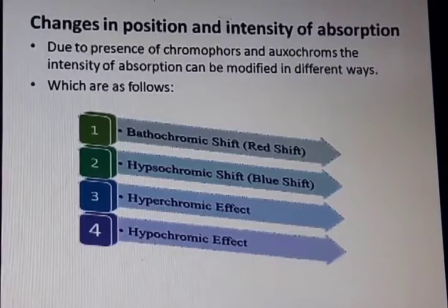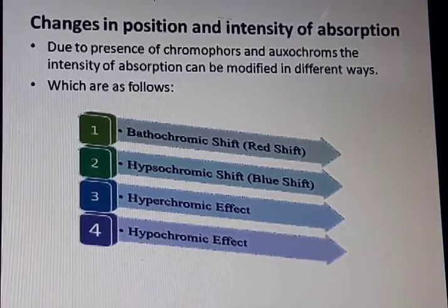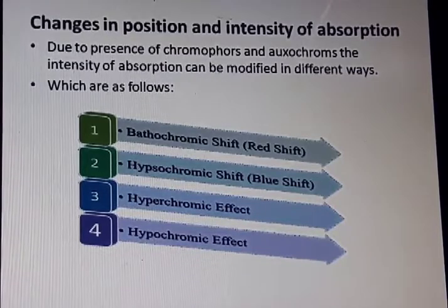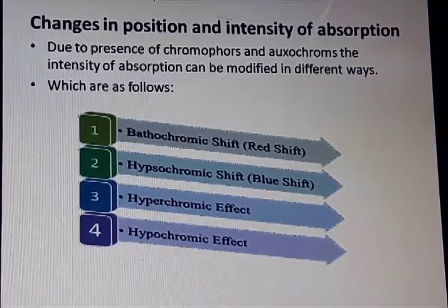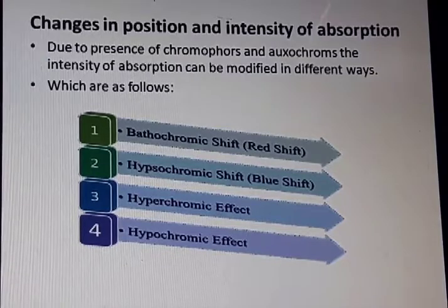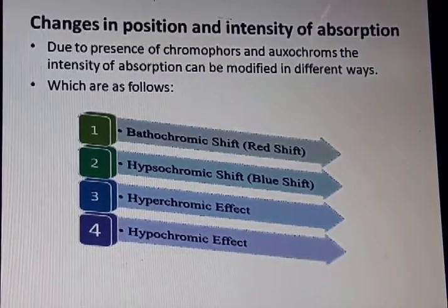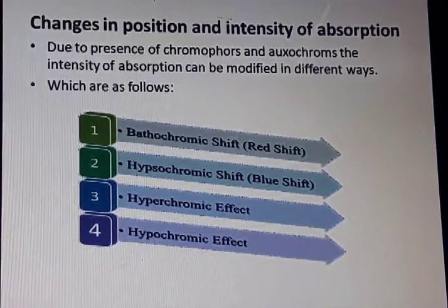Due to the presence of chromophores and oxochromes, the intensity of absorption can be modified in different ways, which are as follows: bathochromic shift or red shift, hypsochromic shift or blue shift, hyperchromic shift, and hypochromic shift.